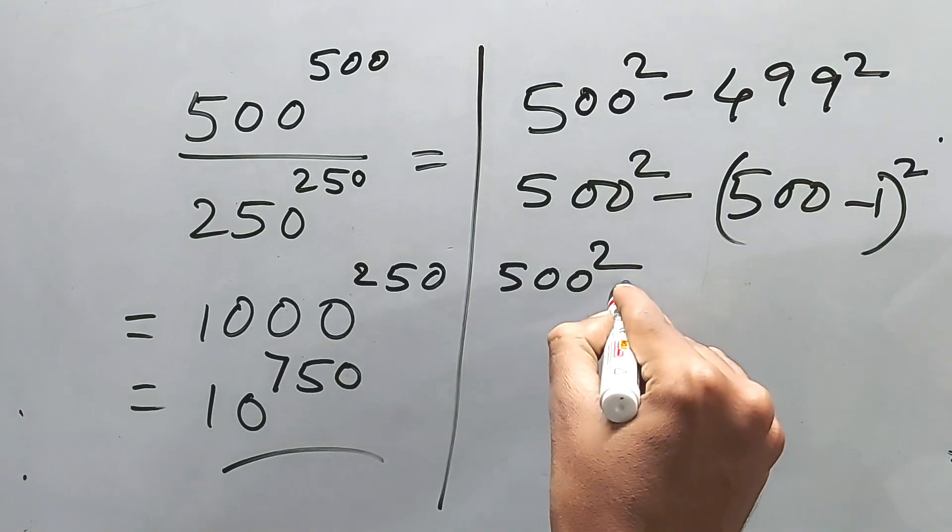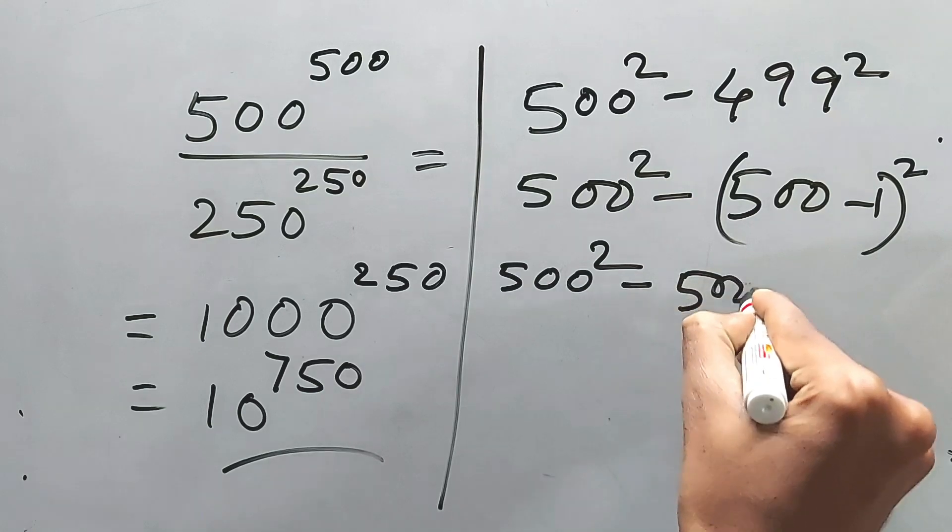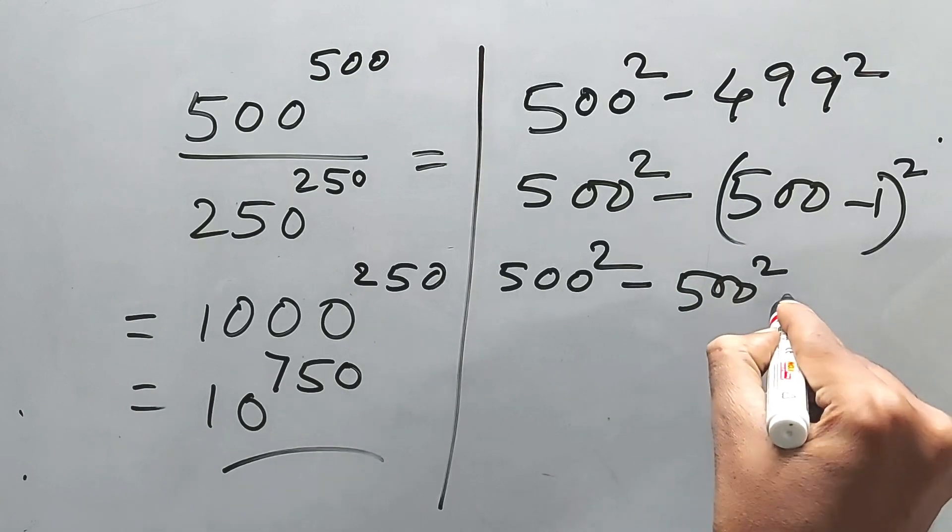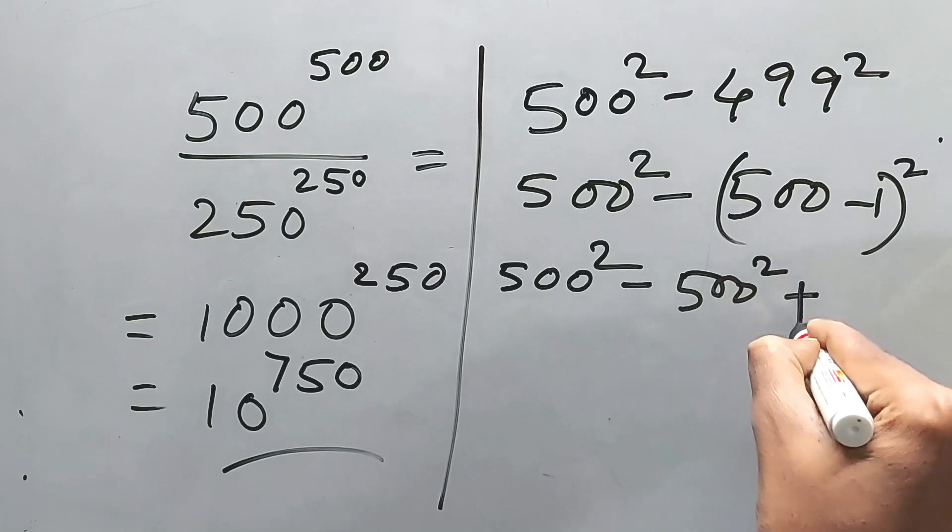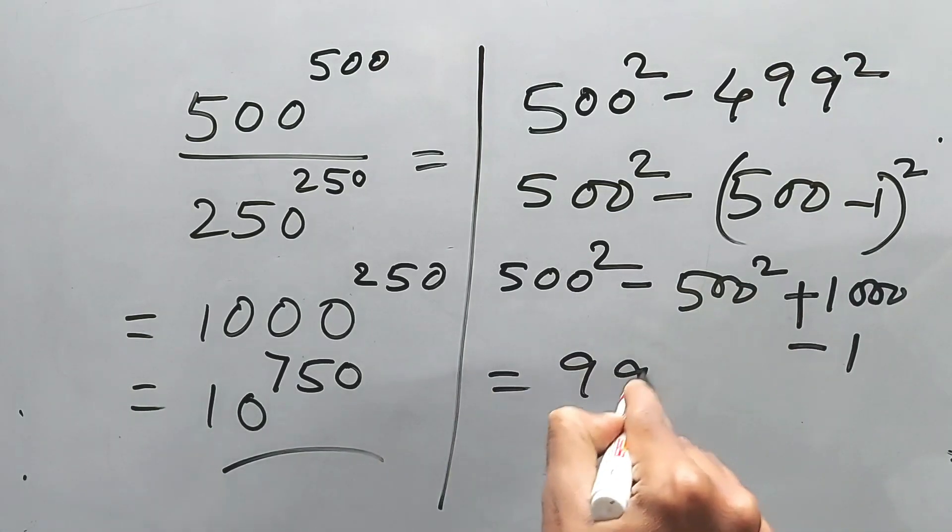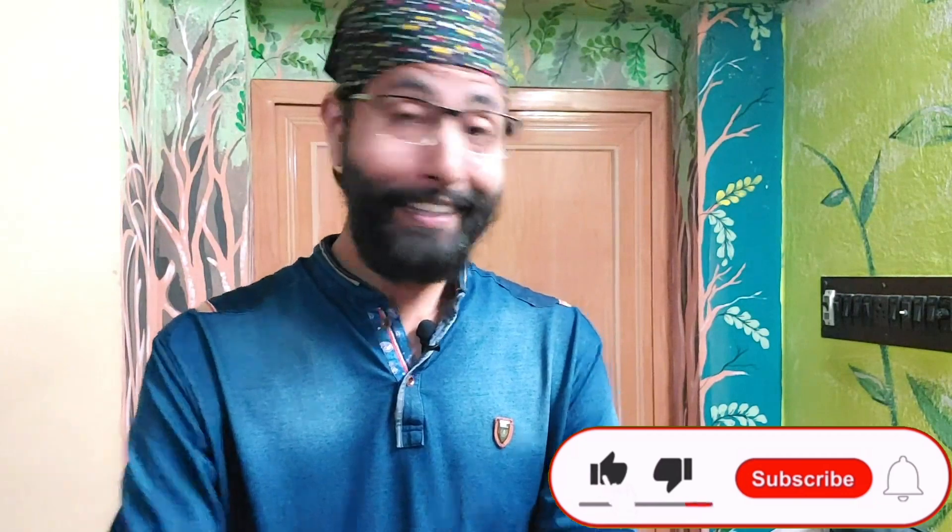500 squared directly. If I'm writing, this one is also 500 squared minus 2ab plus 1000 and minus 1. So these things will be cancelled automatically, and this one will be 999. You like it? Please like, share, and subscribe this channel. Bye.